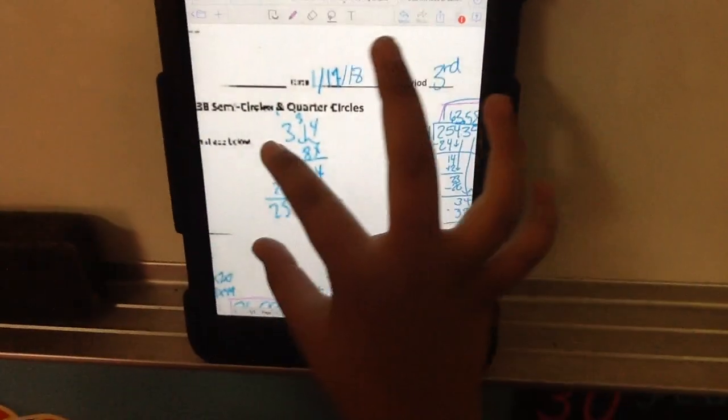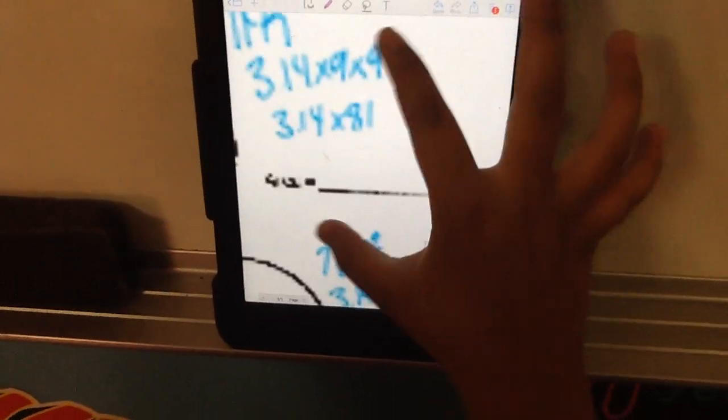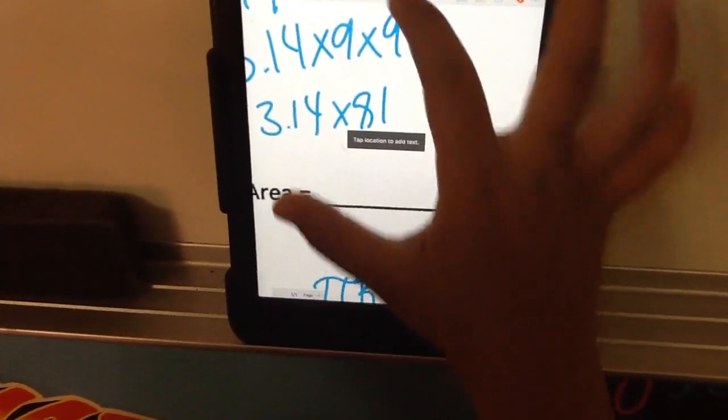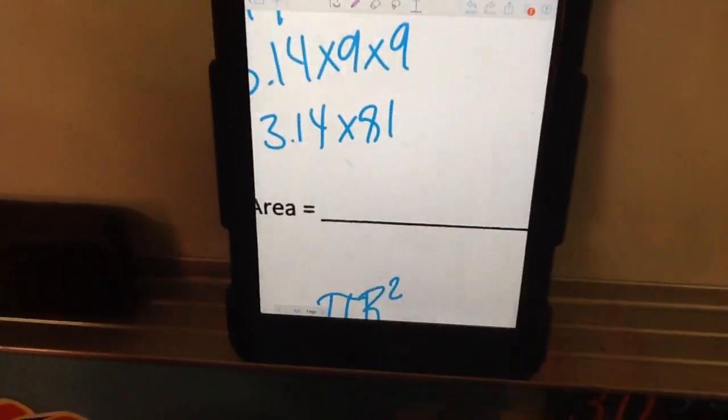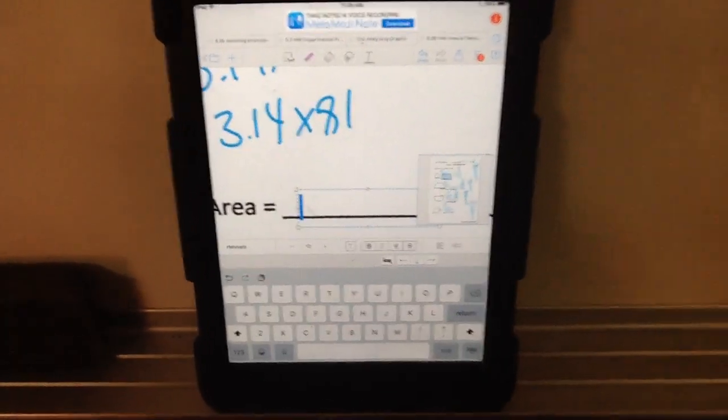To use the textbox, I'll press here, tap a location, and double-click it.